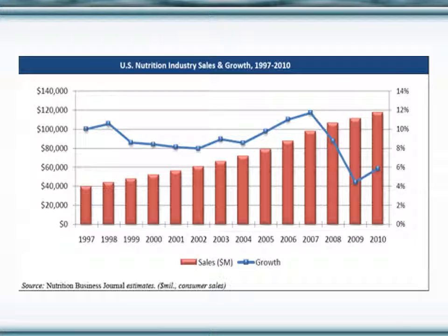If you look at 1997, you can see that we have nearly increased three times the amount of money spent on nutrition-related services from 1997 to 2010. If you look at that blue line, it takes a look at the growth that has happened every year. Because that blue line is above zero — even though it goes down from 2007 to 2009 — that means the nutrition industry is expanding and growing every single year.